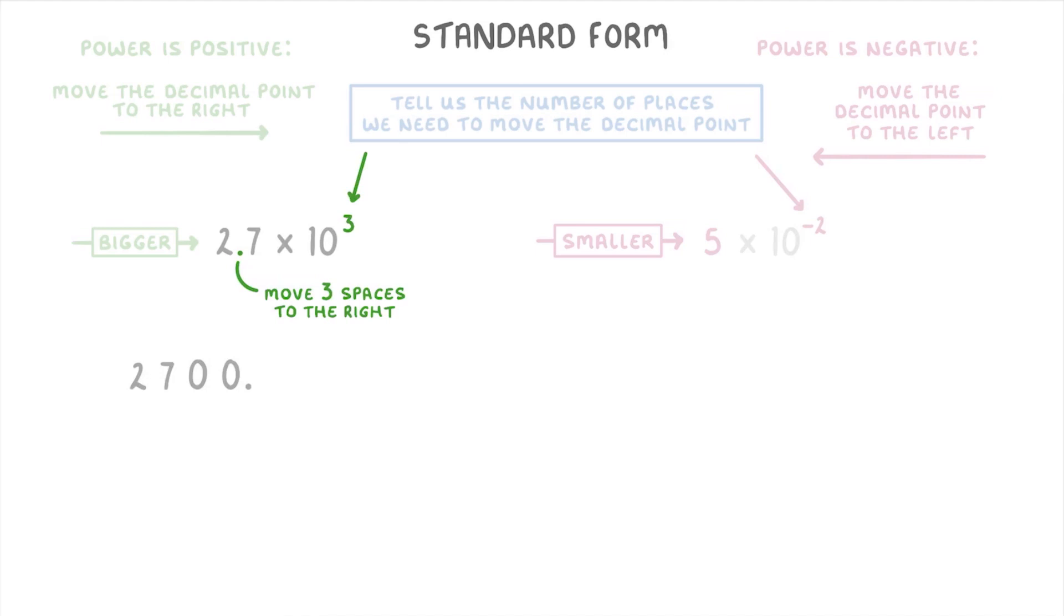For 5 × 10^-2, the negative 2 part means that you need to move the decimal point two places to the left this time. So you write out the 5, but also need to add a point zero so that you can work with the decimal point.